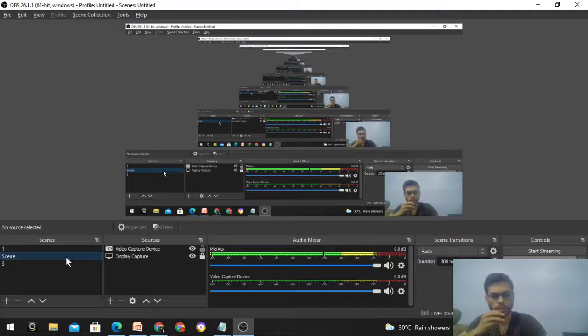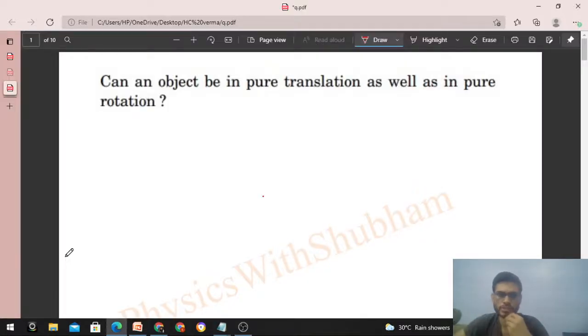Okay, hi everyone. Today let's discuss one interesting problem. Can an object be in pure translation as well as in pure rotation? Let me take any object.